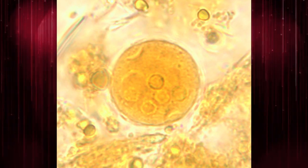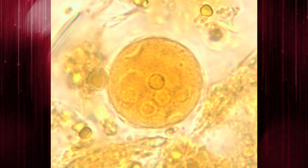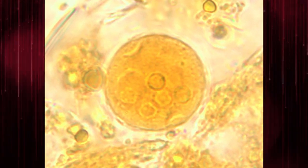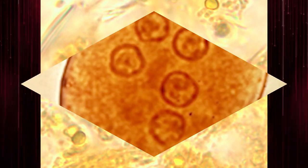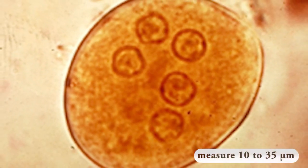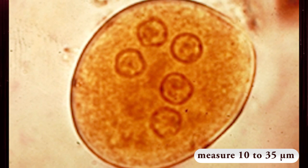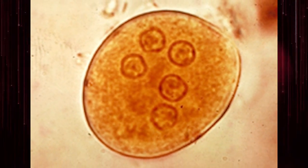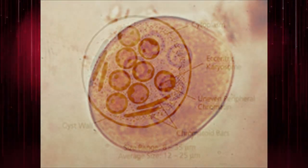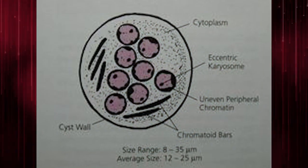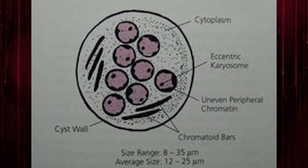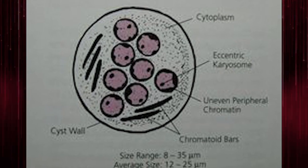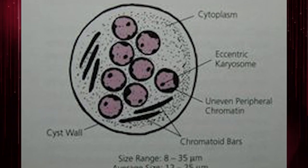Cysts of Entamoeba coli are usually spherical, but may be elongated, and measure 10 to 35 micrometers. This means they are slightly larger than the cyst of Entamoeba histolytica.